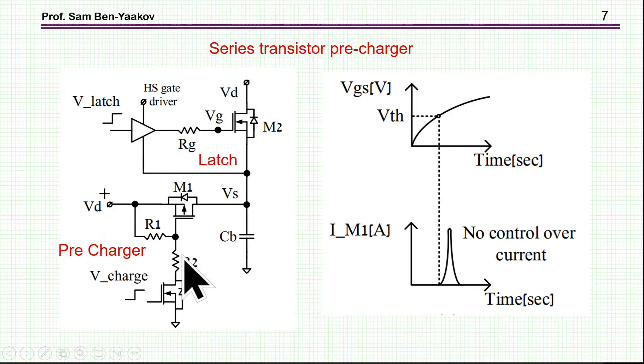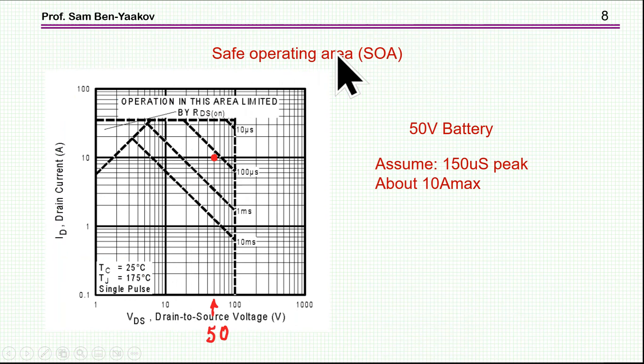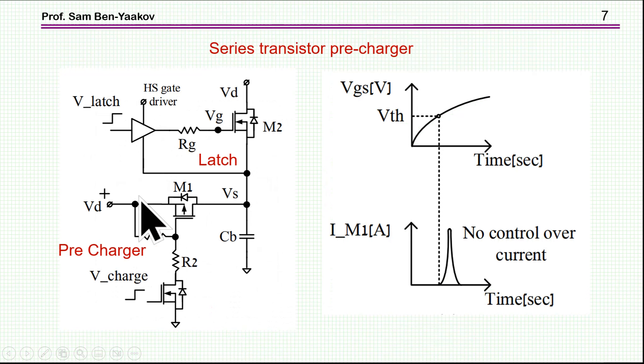Another approach would be to use a MOSFET as a series power element. But in this case there are some problems. First of all, there might be quite a bit of high current. It's very difficult to control it even if you are putting capacitor to slow down because the gain is very high. And then also we might exceed the safe operating area. For example, if this is a 50 volt battery, then at the beginning we have all the voltage of the battery across the transistor because the capacitor still has zero voltage.